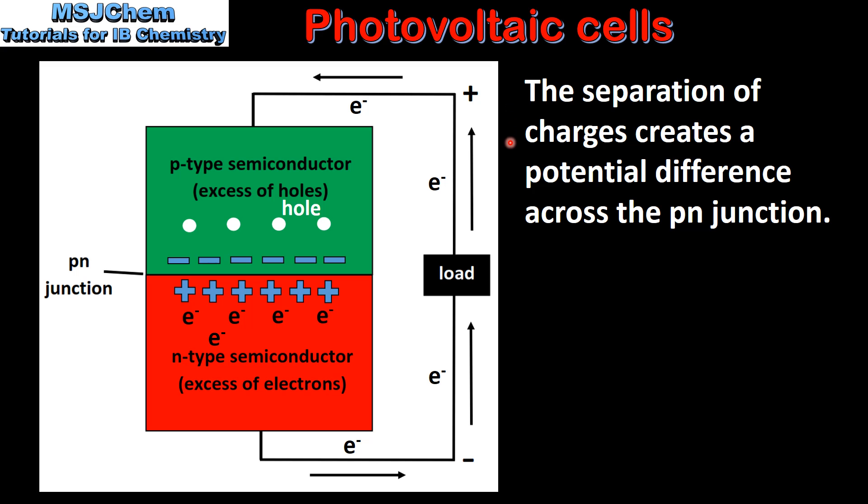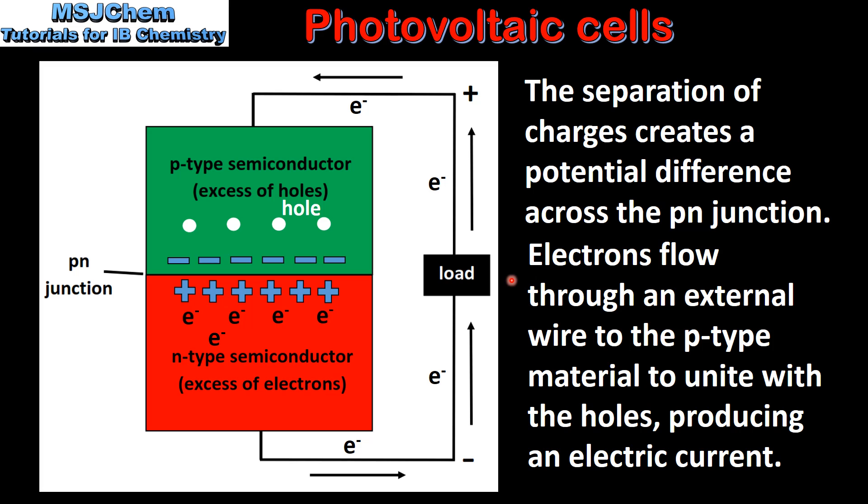The separation of charge creates a potential difference across the p-n junction. Electrons flow through an external wire to the p-type material to unite with the holes, producing an electric current. Here we can see the electrons flowing from the n-type semiconductor to the p-type semiconductor. This process continues for as long as the cell is exposed to sunlight.